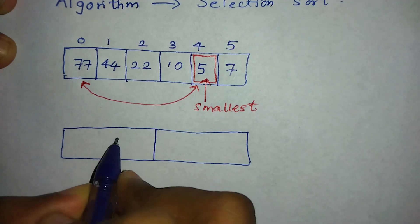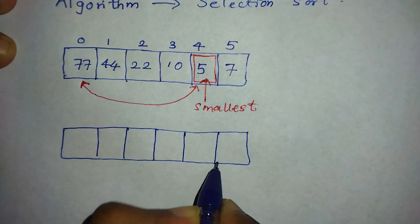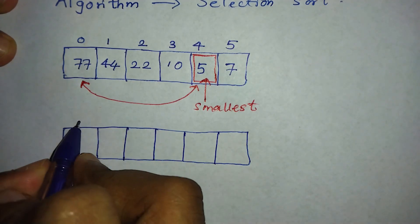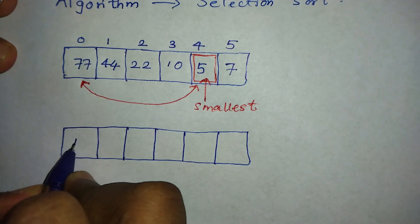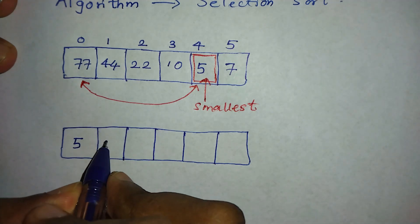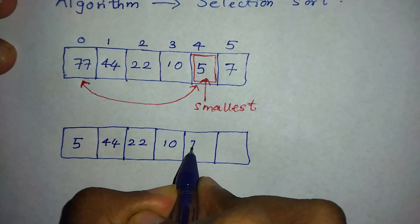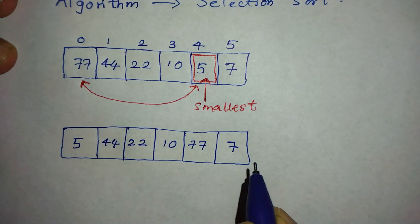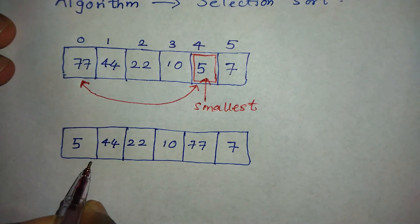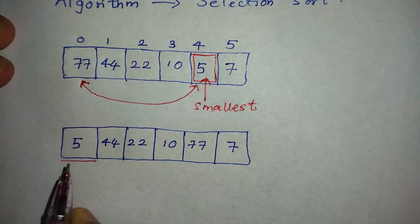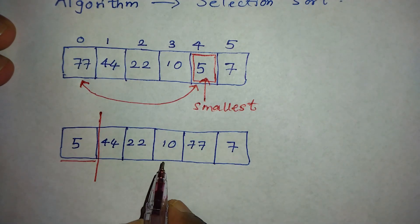Now I'm going to swap number 5 with 77 — then number 5 comes at the beginning of the array: 5, 44, 22, 10, 77, and 7. Five and seventy-seven are swapped. The left side of the array is now sorted. I'm going to draw a straight line — the left side is the sorted array. Each and every time the array is sorted left to right. If there is one element, that one element is always sorted.